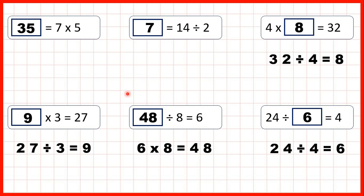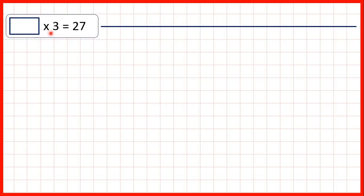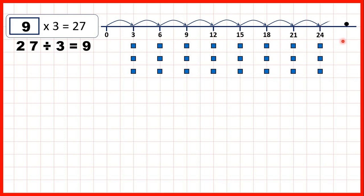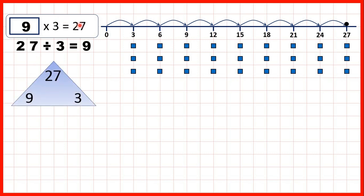Now let's take a closer look at some of these questions. We had something times 3 equals 27. To work out our answer, we divided 27 by 3 and got 9. On a number line, we can count up in steps of 3 until we get to 27: 3, 6, 9, 12, 15, 18, 21, 24, 27. We've made 9 jumps altogether, so our missing number is 9. We can also make a number family triangle with 9 and 3 on the bottom — the numbers we multiply — and 27 on top.